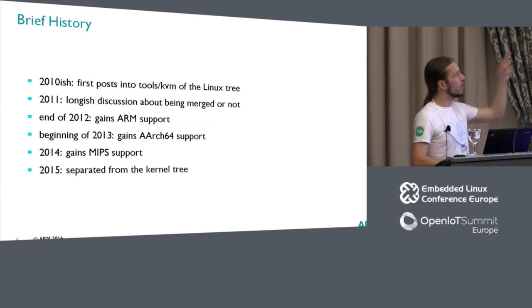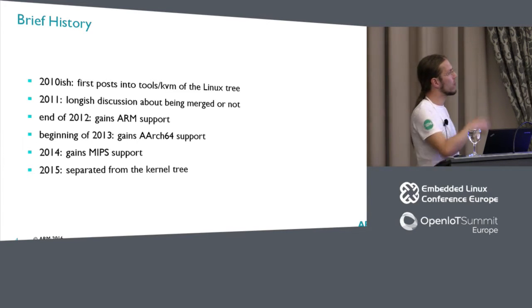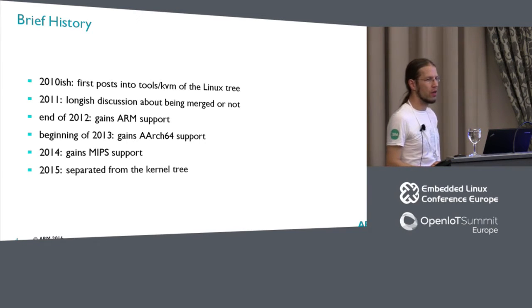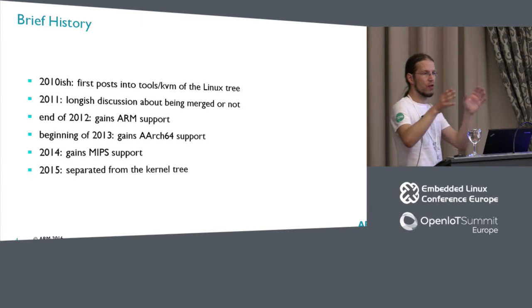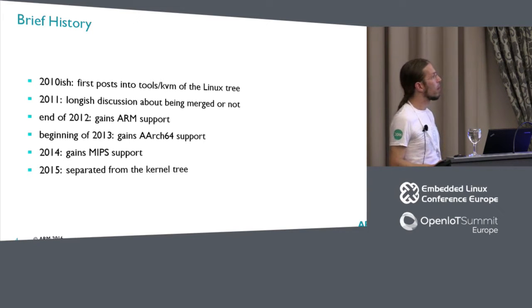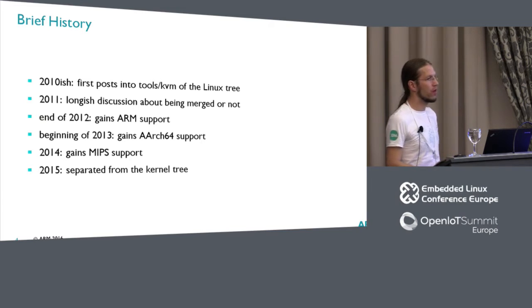At this point it was x86 only. At the end of 2012 it gained ARM support — ARM32 — and just a few months later, ARM64 support. There was some refactoring to make it work, because I think that was the first foreign architecture. You can still see in the code that it was originally written for x86 and then later ported to other architectures. In 2014, it gained MIPS support — probably MIPS 64 only — that was meant to drive the Cavium Octeon processors.